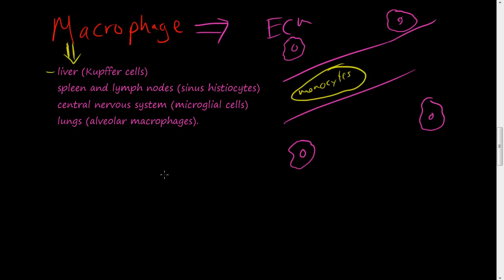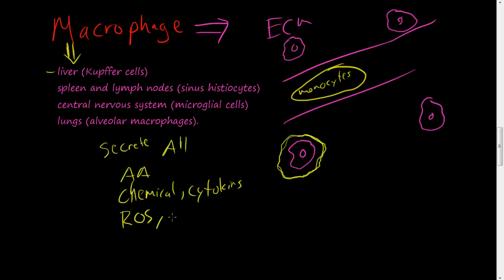If these macrophages in the extracellular matrix don't take care of the problem, they can get bigger and buffer to have more resources to combat the problems. These macrophages secrete all the same factors that the neutrophils did in acute inflammation - arachidonic acid, cytokines, reactive oxygen species, nitric oxide - all these free radical substances. They are the main cell in charge of chronic inflammation.